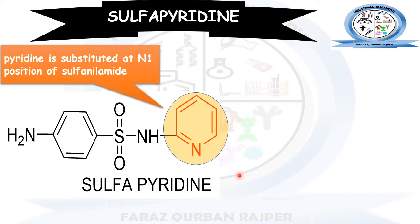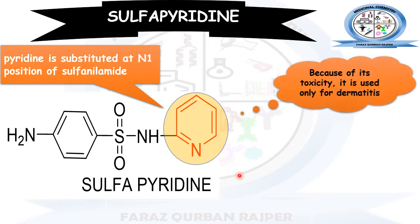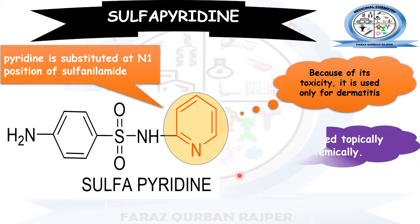When the N1 position of sulfanilamide is replaced or substituted with pyridine, it will be known as sulfapyridine. It has high toxicity, and because of this, it is only used for the treatment of dermatitis.